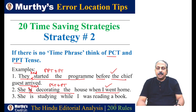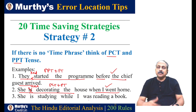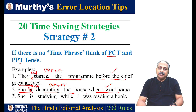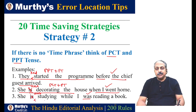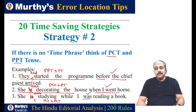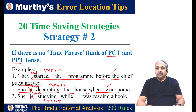'She is studying while I was reading a book.' Here there is no time phrase, and two actions are going on at the same time in the past. For both actions, we use past continuous tense. 'I was reading' — no problem. But we cannot say 'is' for the other; we have to say 'was.' The corrected sentence: 'She was studying while I was reading a book.' The combination is past continuous plus past continuous. If there's no time phrase, quickly recollect these two tenses and check.